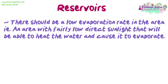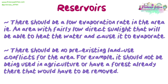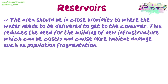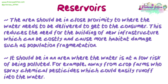There should be a low evaporation rate in the area — i.e. an area with fairly low direct sunlight — that will be able to heat the water and cause it to evaporate. There should be no pre-existing land use conflicts for the area; for example, it should not be being used in agriculture or have a forest already there that would have to be removed. The area should be in close proximity to where the water needs to be delivered to reach the consumer, reducing the need for building new infrastructure, which can be costly and cause more habitat damage such as population fragmentation. It should also be in an area where the water is at a low risk of being polluted, like being away from crop farms that spray chemical pesticides, which could easily run off into the water.